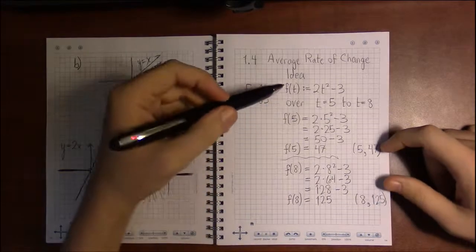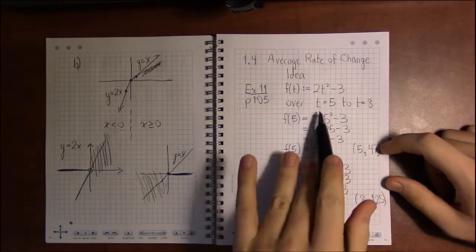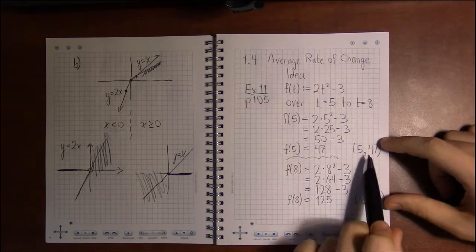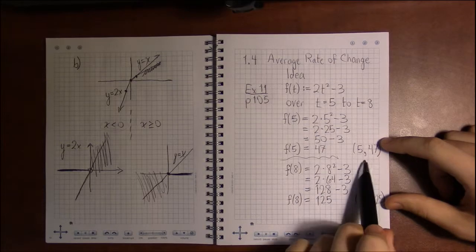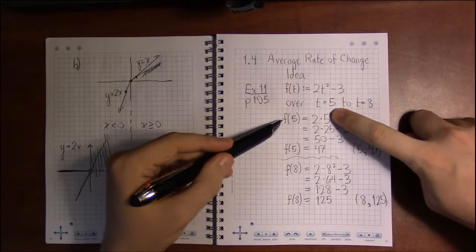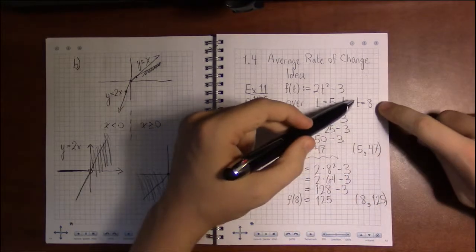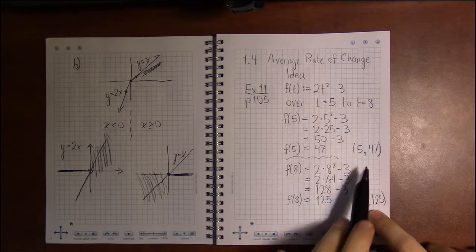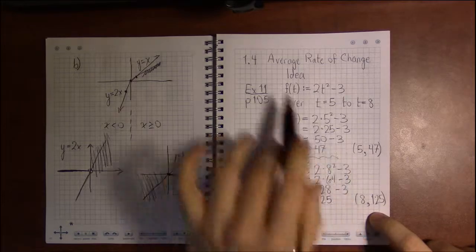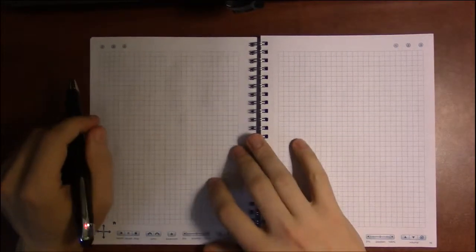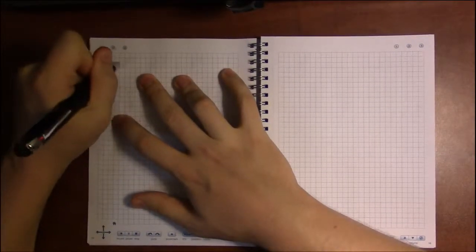So the average rate of change of f over these two inputs is just the slope of the points that we got from these two inputs. When t equals 5 that gave us a point, and when t equals 8 that gave us another point. From these two points we compute the slope and that's the average rate of change.